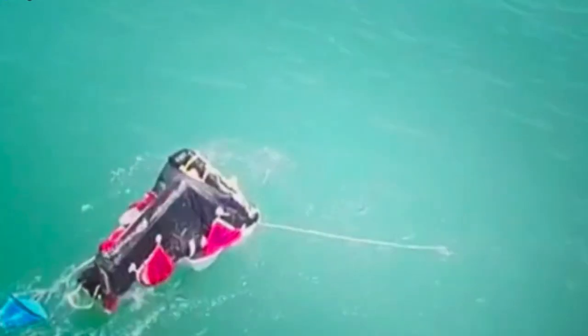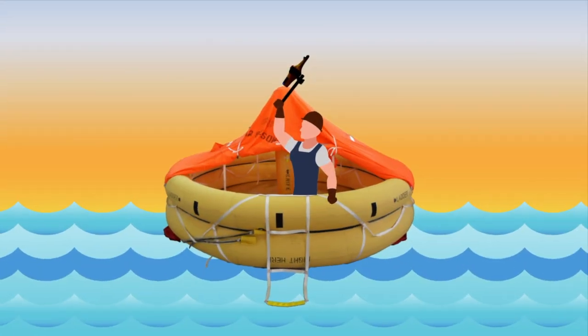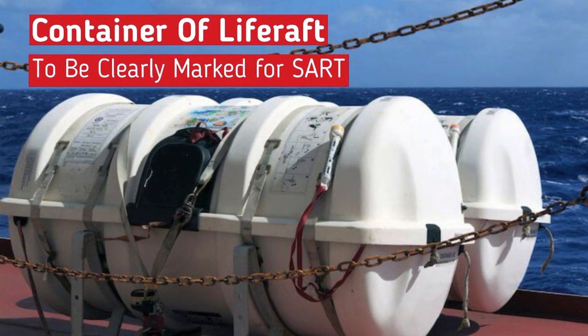In case of canopied reversible life rafts the transponder shall be so arranged so that it can be readily accessed and can be manually erected when the life raft is deployed. Containers of life rafts fitted with transponders shall be clearly marked.